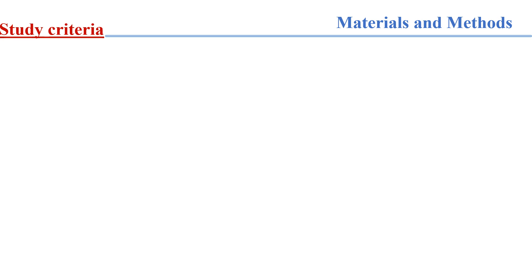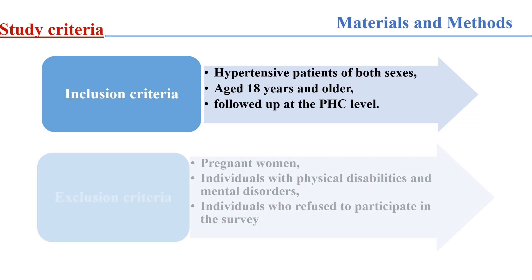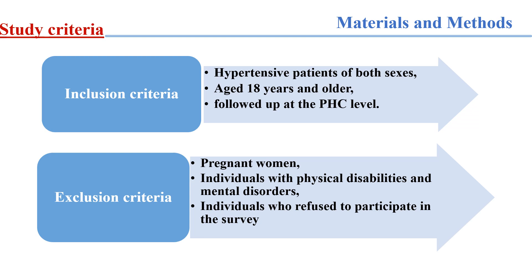Inclusion criteria included hypertensive patients of both sexes, aged 18 years and older, followed up at the primary health care centers. Exclusion criteria included pregnant women, individuals with physical disabilities and mental disorders, and individuals who refused to participate in the survey.